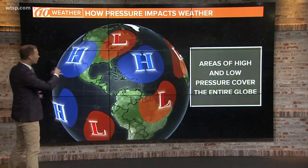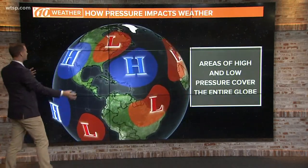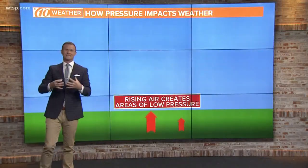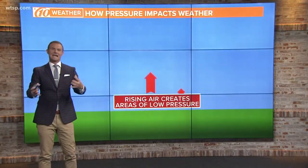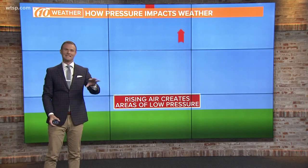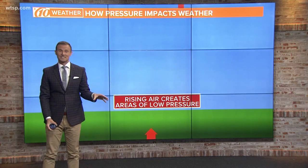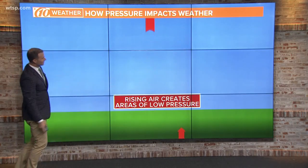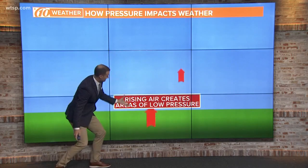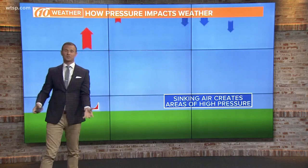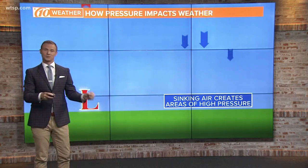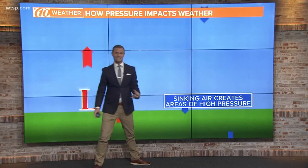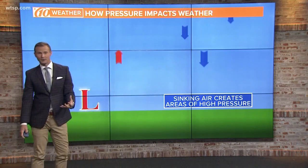There are areas of low and high pressure that cover the entire globe. It depends on how the Earth is heated and cooled based upon different conditions on the ground. Rising air creates areas of low pressure, and the opposite is true when you have sinking air — sinking air creates areas of high pressure.